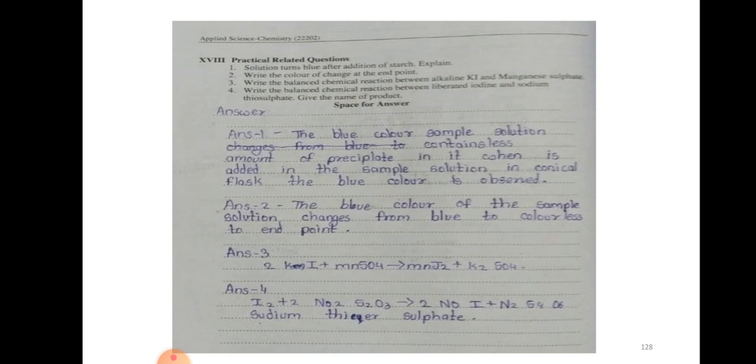Here I have written it. Solution turns blue after addition of starch. Why? As the iodine is liberated, that is why solution turns blue. Which color changes at the end point? At the end point, solution changes color from blue to colorless. Balance chemical reactions we already explained in theoretical background. Here I already written. Question number 3, 4, answers are given.